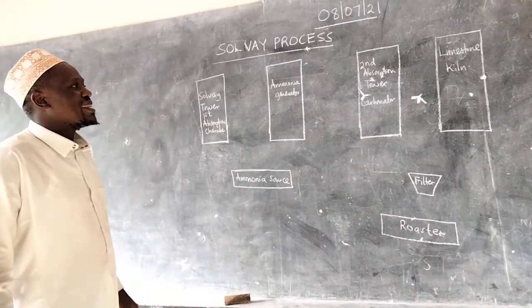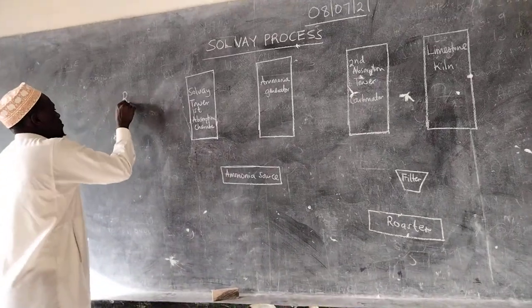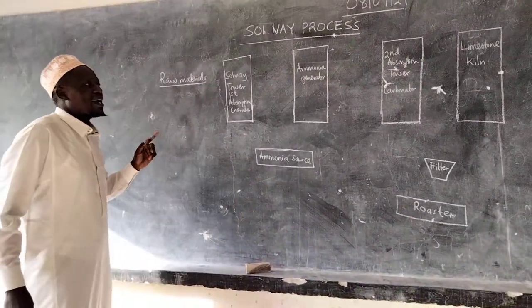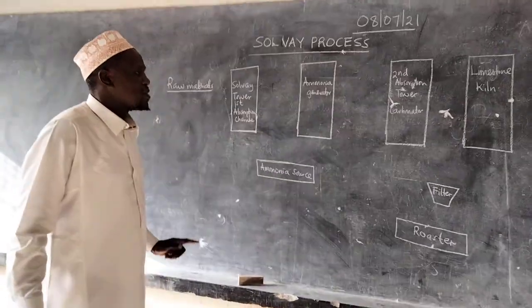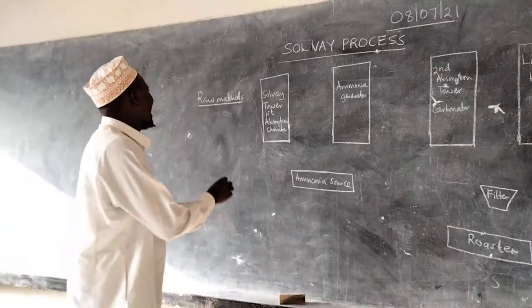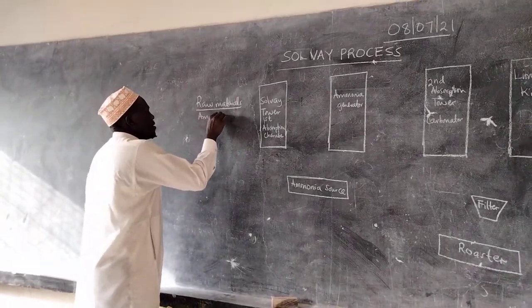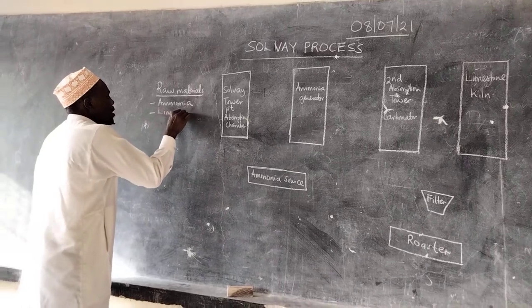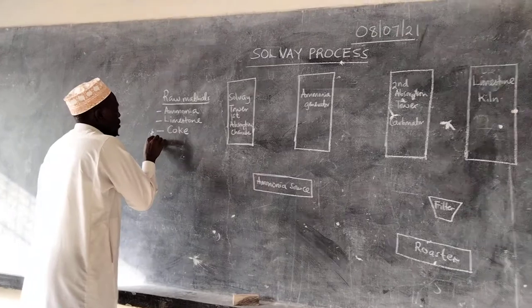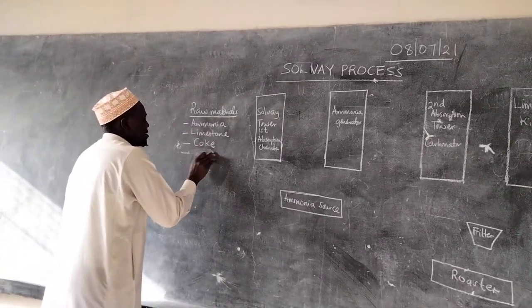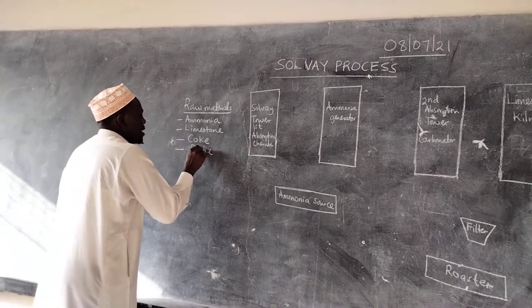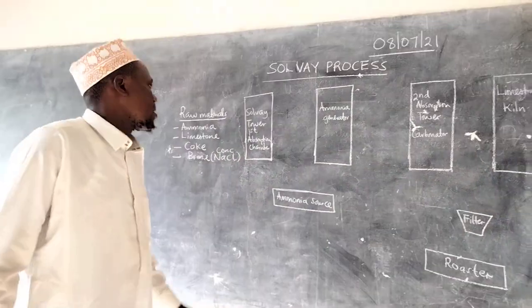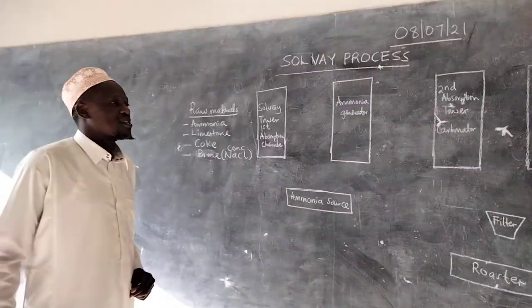The raw materials of the Solvay process are the fundamental materials required for the process to take place. These are: ammonia, limestone, coke, and brine. Brine is concentrated sodium chloride. These are the raw materials required for this process.